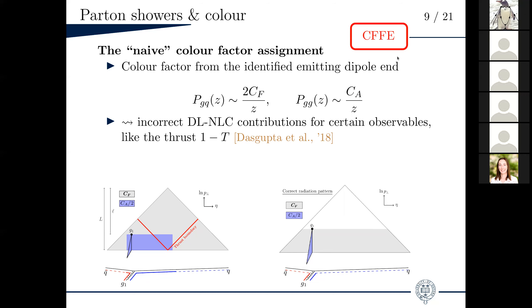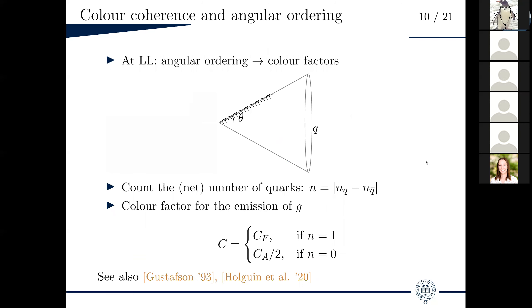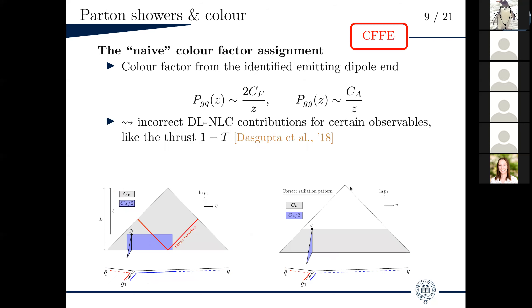So this wrong naive color factor assignment scheme, I will call CFFE in the following for color factor from emitter. As I said, we'll try to come up with something more sophisticated. So very basically the starting point of our algorithm is the following observation. At leading log, what color factor you choose is dictated by angular ordering arguments. If you remember your QFT courses. So for a configuration like this one with a radiated gluon emitted at an angle theta, what one should do is that one should draw a cone of opening angle theta around the closest dipole end, and then just count the net number of quarks that are contained in that cone. So if it's one, the correct color factor is CF. If it's zero, the correct color factor is CA. This will reproduce basically what's shown on the right here.